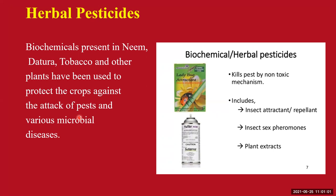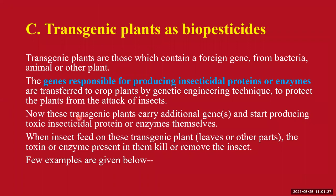Other than microbial pesticides, we also have herbal pesticides. Biochemicals present in neem, datura, tobacco, and other plants can be used to protect crops against insect attack and microbial diseases. These biochemical or herbal pesticides include neem plant extract, datura or tobacco plant extract, insect sex hormones, insect attractants, and insect repellents.